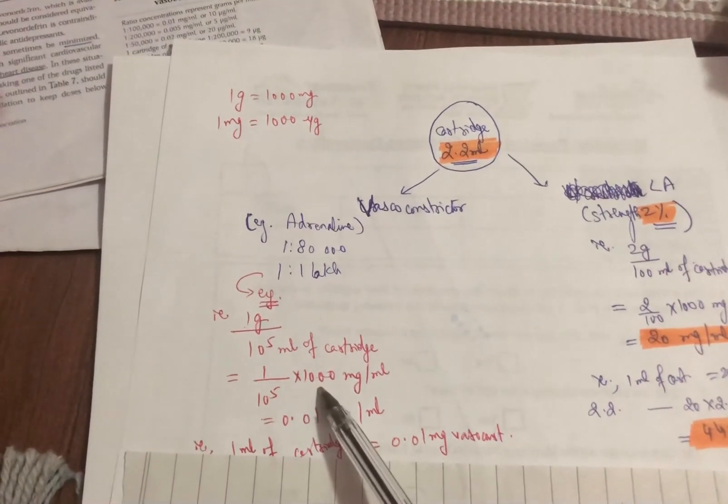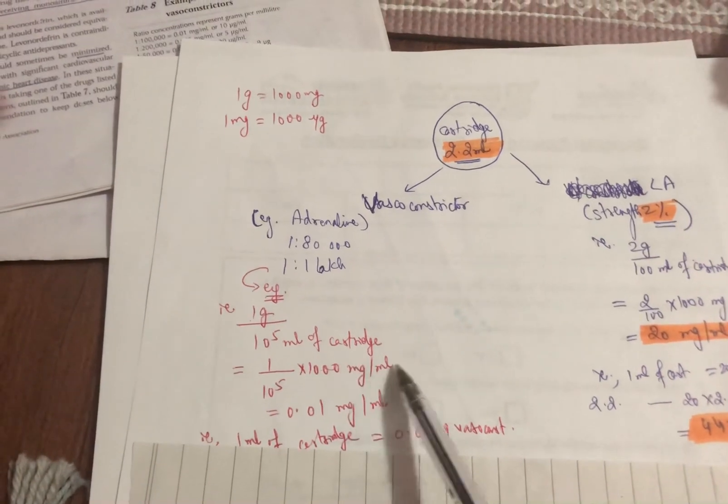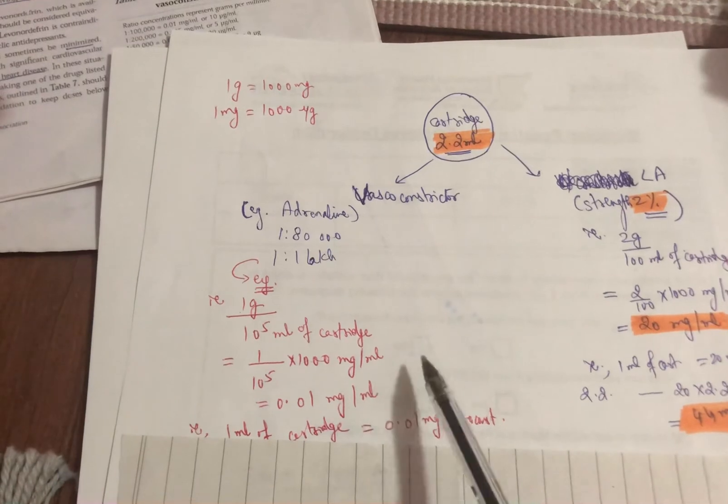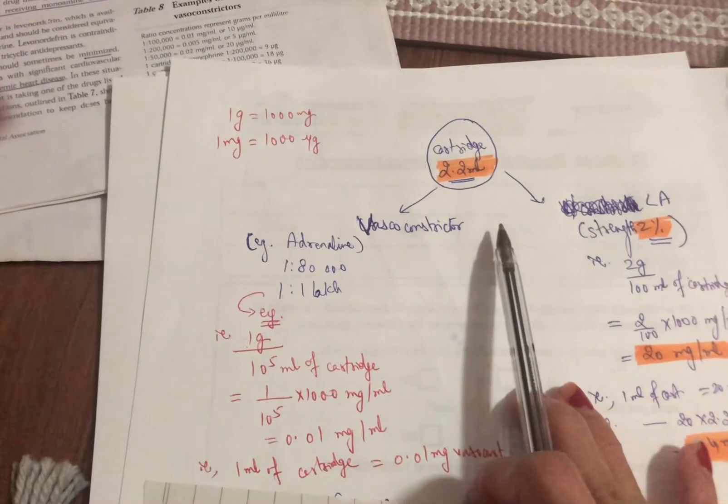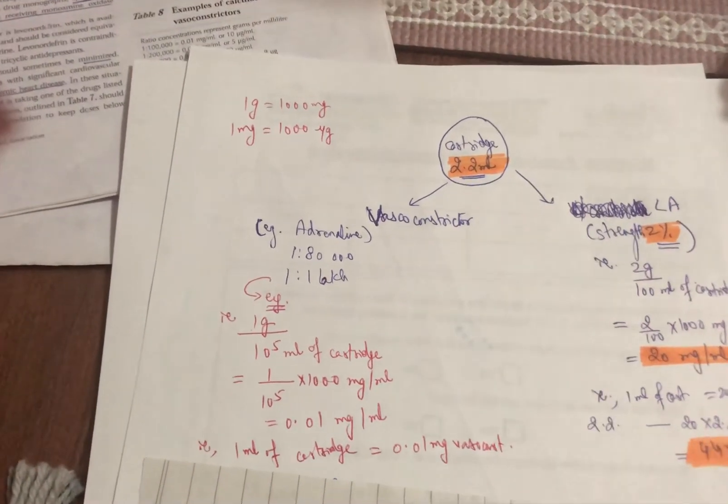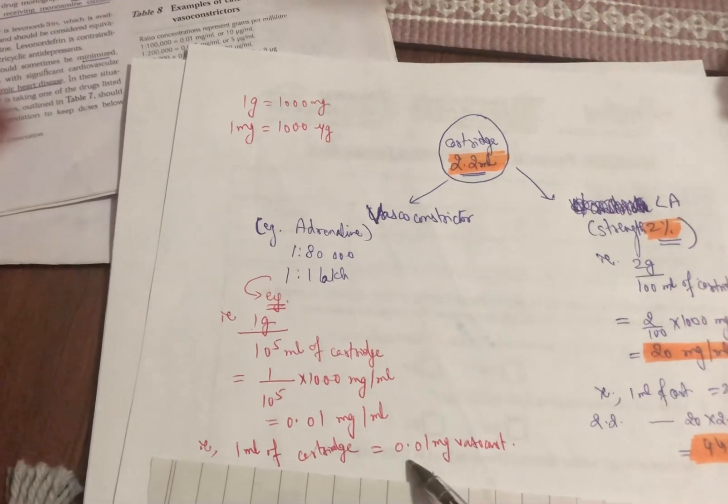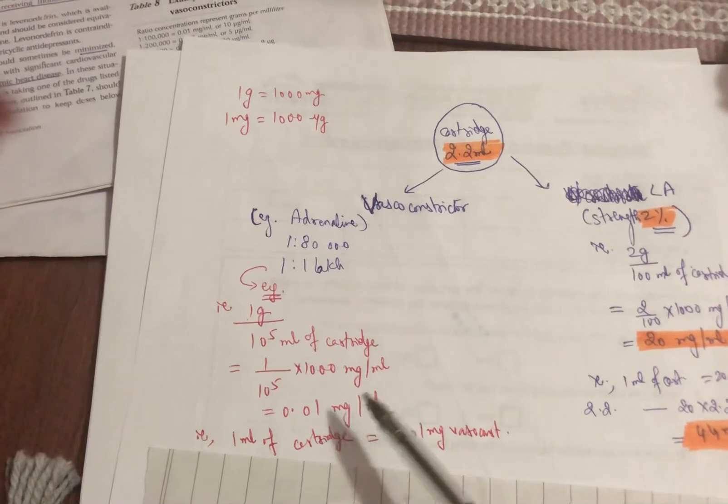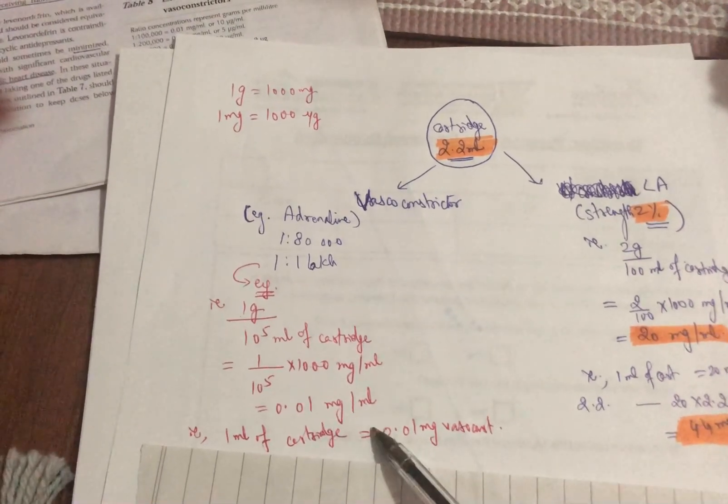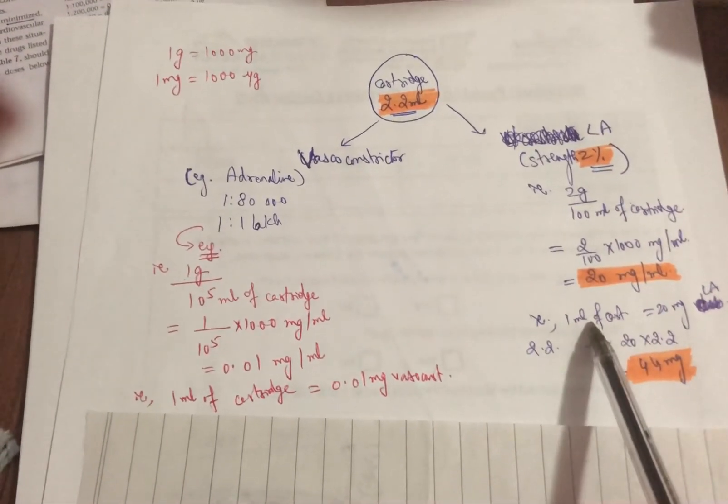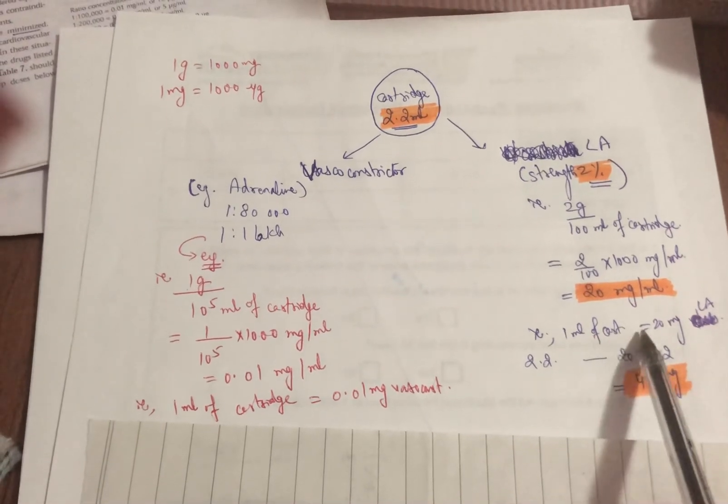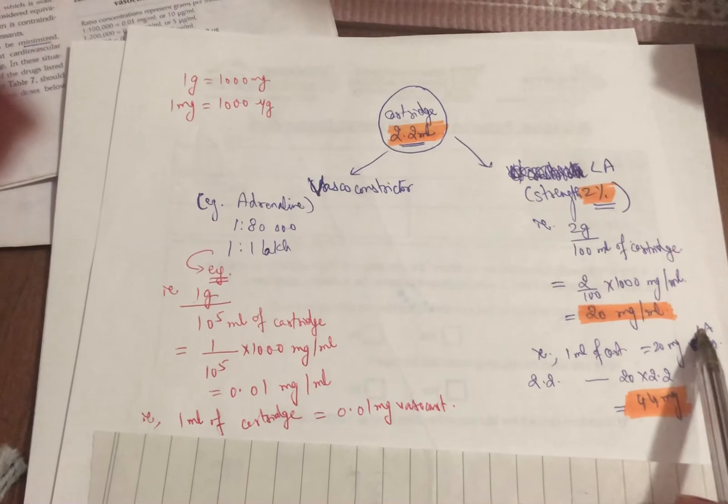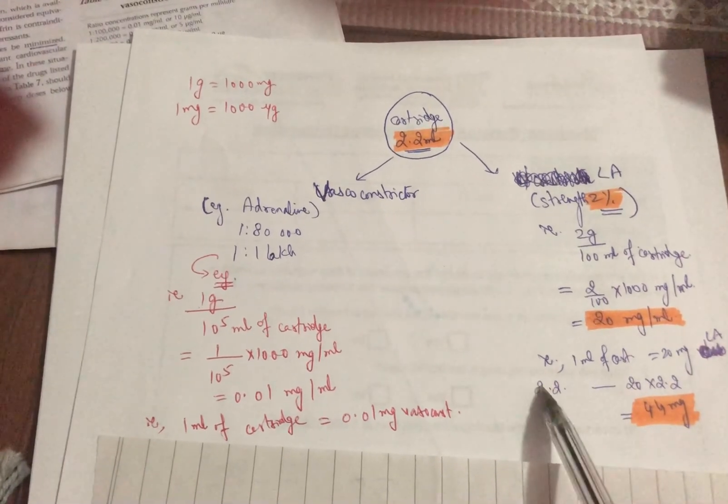So same way we're going to multiply this with 1000 and this becomes milligrams per milliliter. So this comes out to be 0.01 milligram per milliliter and this means that 1 milliliter of the cartridge is having 0.01 milligram of vasoconstrictor. That is 1 milliliter is having 0.01 milligram of the vasoconstrictor just like we said 1 milliliter of the cartridge is having 20 milligram of the LA solution.